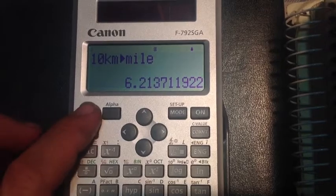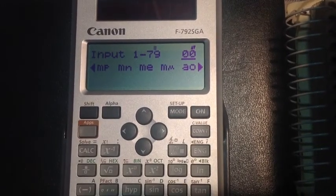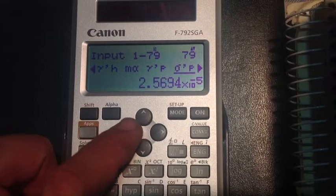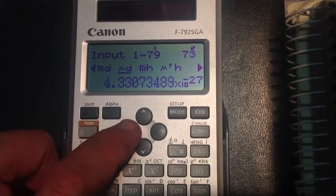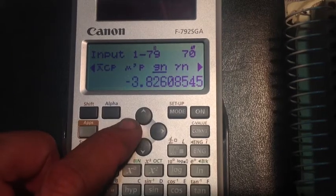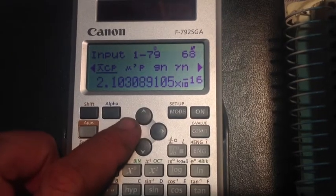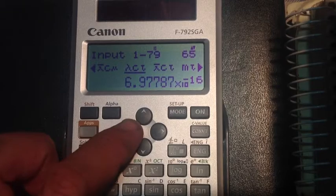If I press shift and the constant key, conversion key, sorry, you can scroll through and see the various constants. It will also give you the code too, but you can scroll through and pick whatever constant you want.